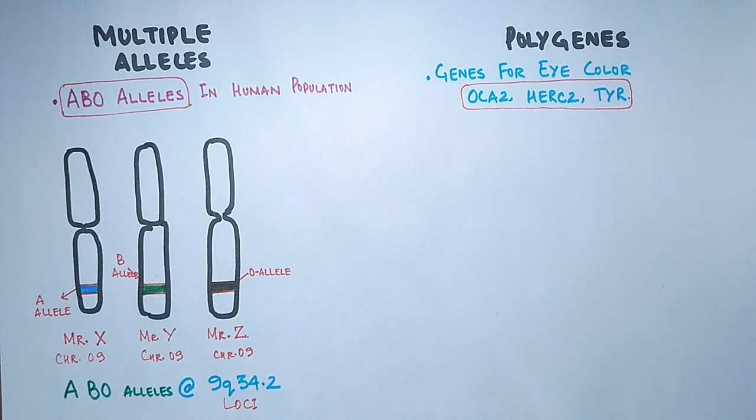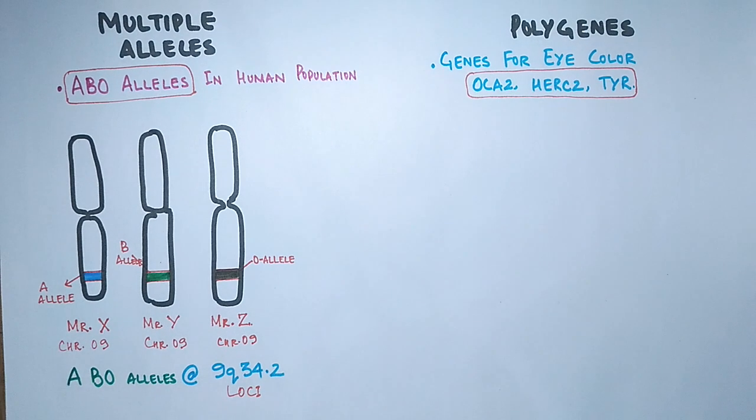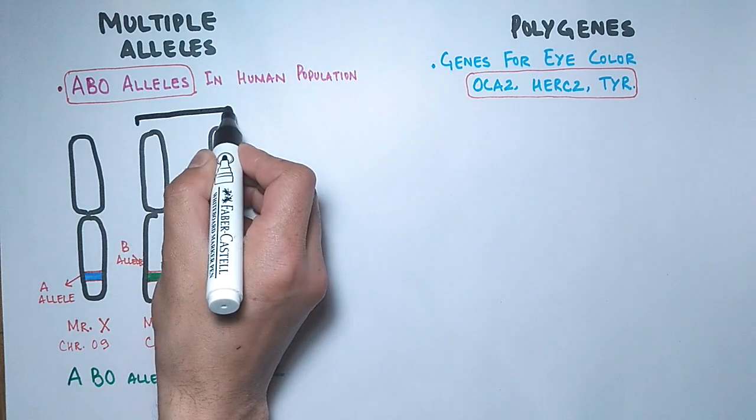All these alleles code for a single phenotype, that's the blood group. But for an organism we have only two alleles present for a gene. That can be any two from these three alleles.